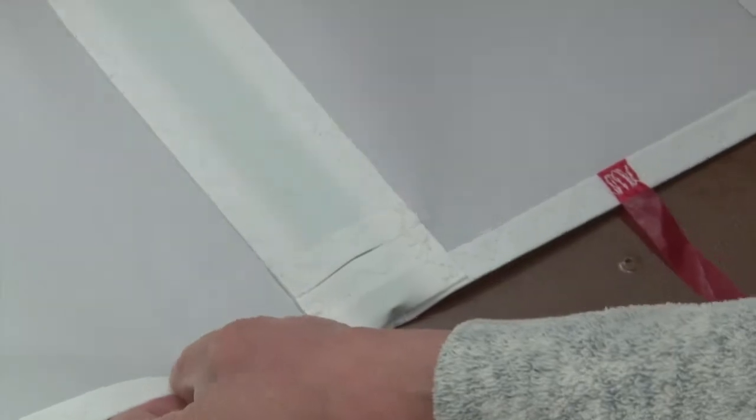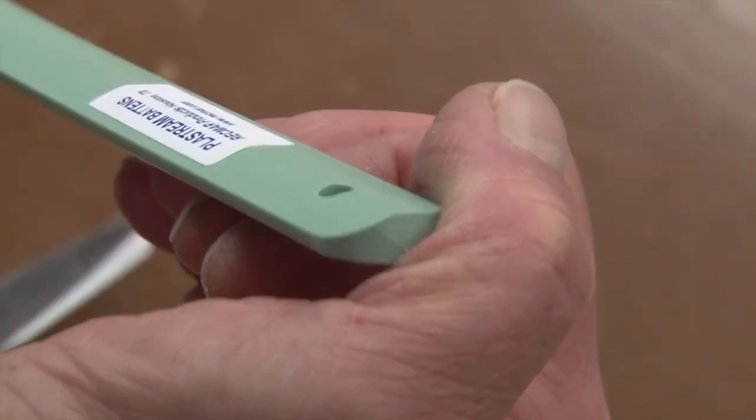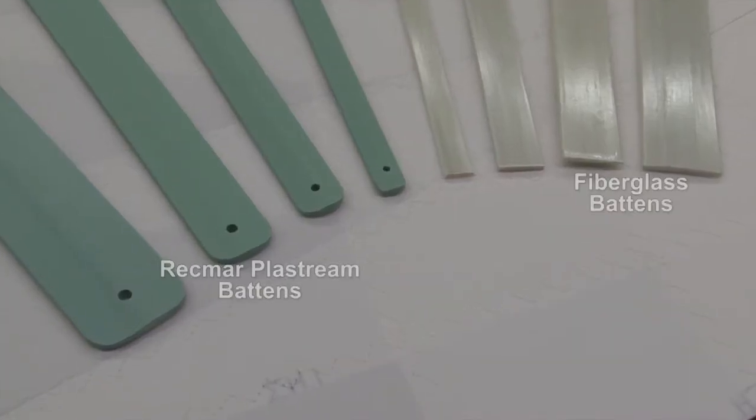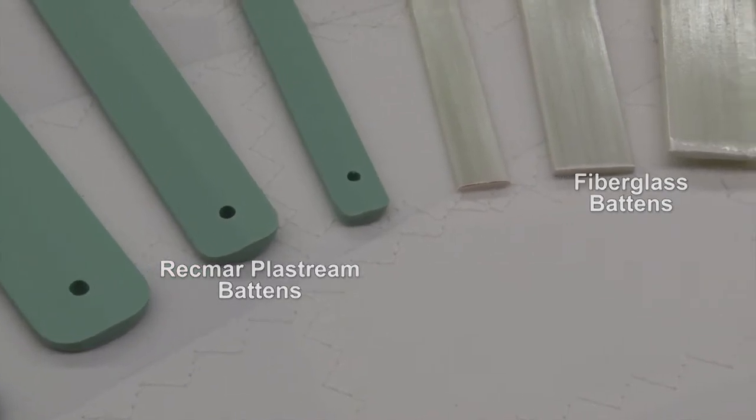Unlike fiberglass battens, these Rekmar Plastream battens will not splinter your fingers or your sail and do not require end caps. The battens to the left are the Rekmar Plastream sail battens while the battens to the right are the fiberglass battens.